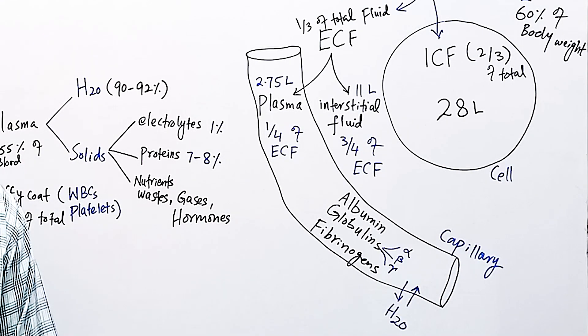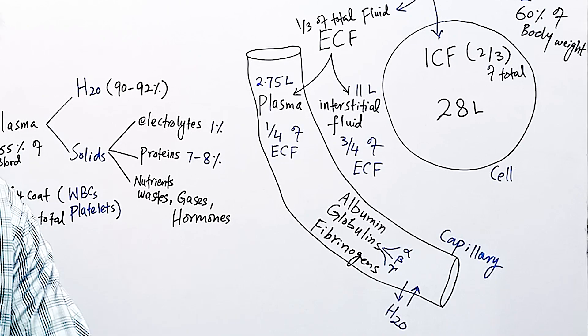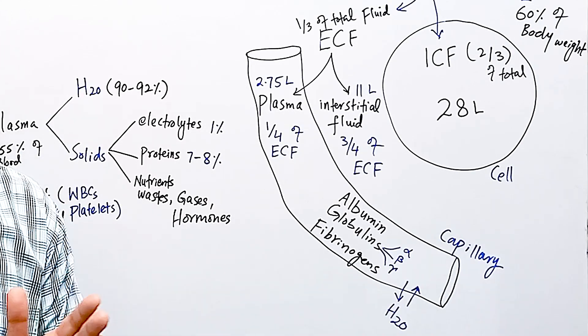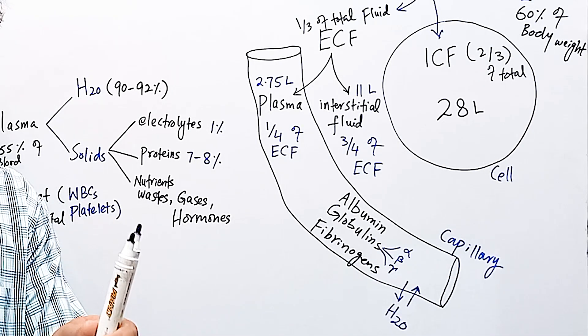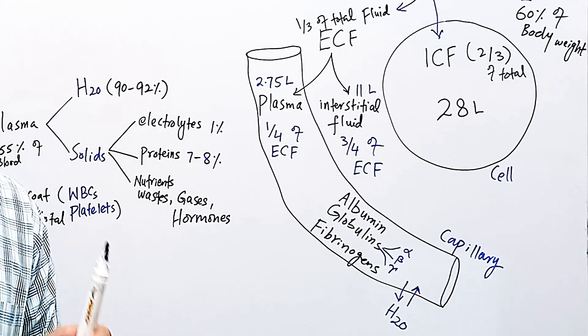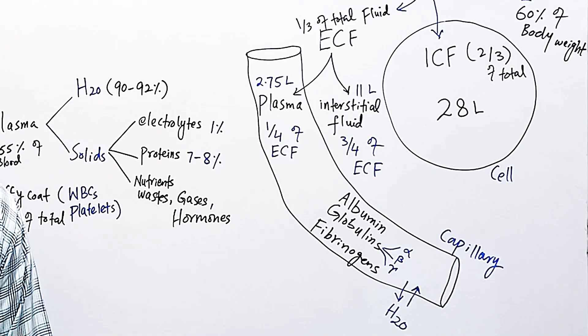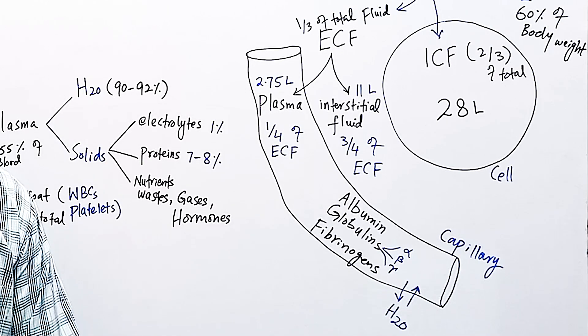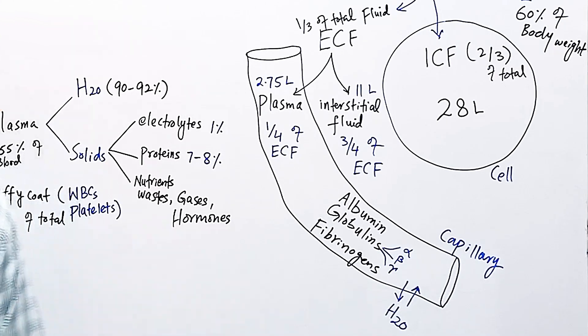Plasma proteins are important for transport of substances in blood. For example, albumin non-specifically binds to water insoluble substances. When those substances bind with albumin they become water soluble and are carried in plasma. Such substances include bilirubin, calcium, fatty acids, steroids, bile salts, and some drugs like penicillin.